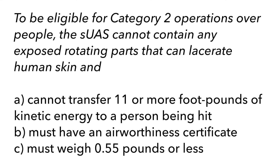Use process of elimination when you're not sure. Option B says an airworthiness certificate — that only applies to Category 4, so scratch that out. Option C, the weight limit of 0.55 pounds, only applies to Category 1 operations, so scratch that out too. That gives us A as the only remaining answer, and that is the correct answer.